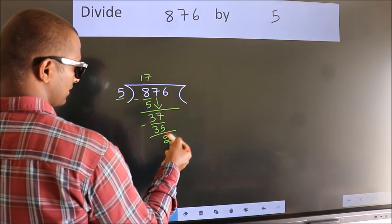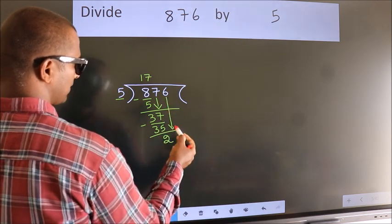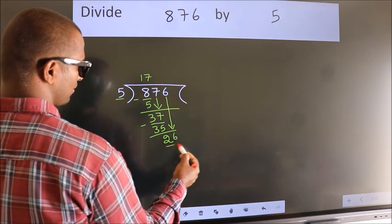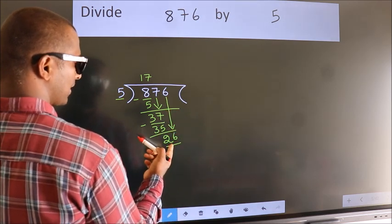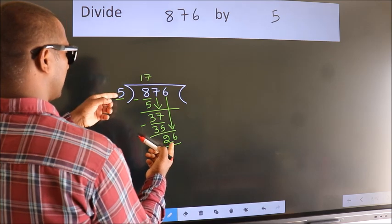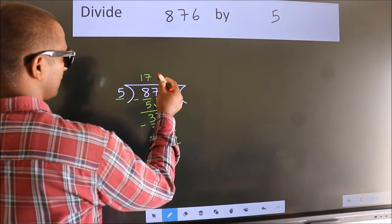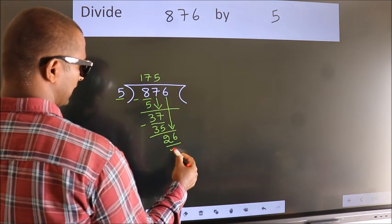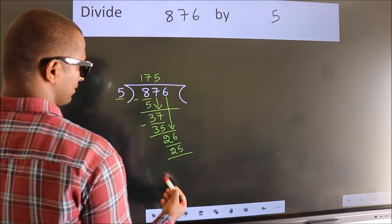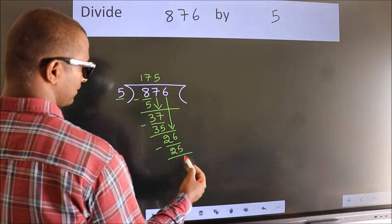After this, bring down the beside number. So, 6 down. So, 26. A number close to 26 in the 5 table is 5 5s 25. Now, we subtract. We get 1.